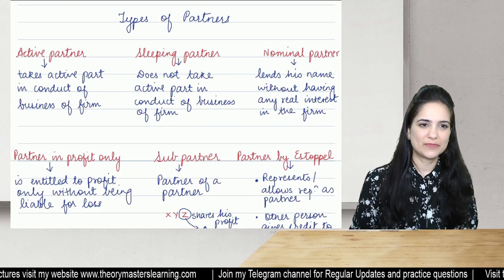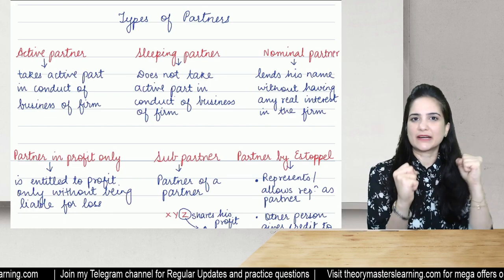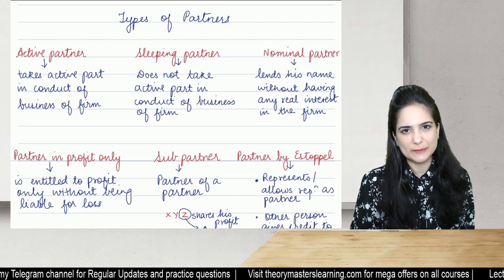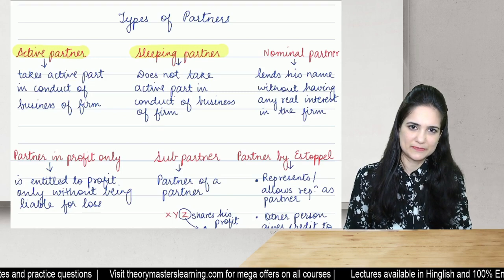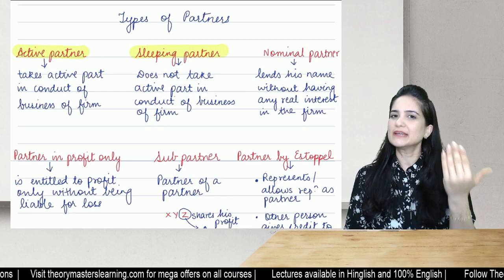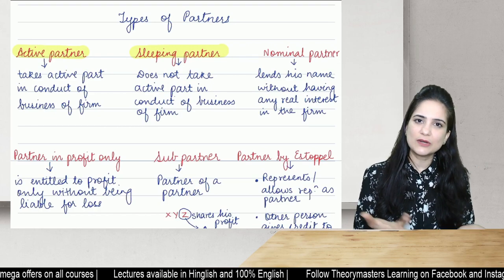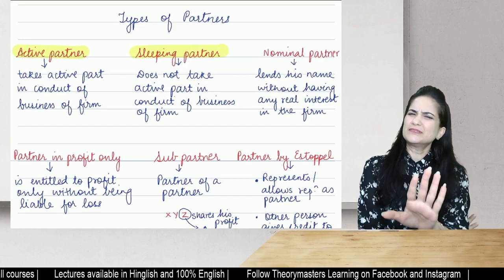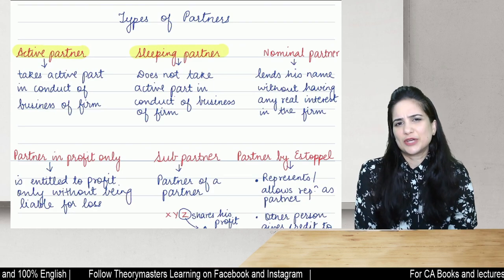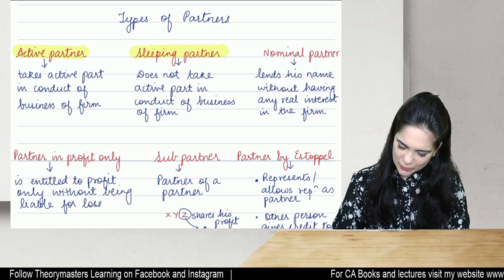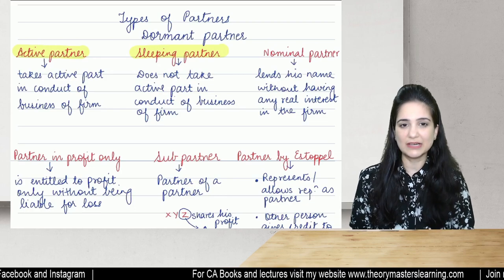Types of partners: an active partner takes active part in the conduct of business of the firm. A sleeping partner is not interested in the business — he only contributes capital and gets his share of profit. He is liable for losses like any other partner, but outsiders are not aware he is a partner. A sleeping partner is also known as a dormant partner.